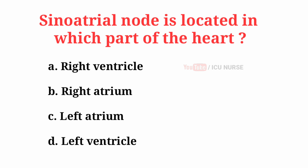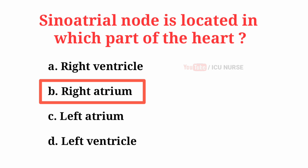Sinoatrial node is located in which part of the heart? The correct answer is B: Right atrium.